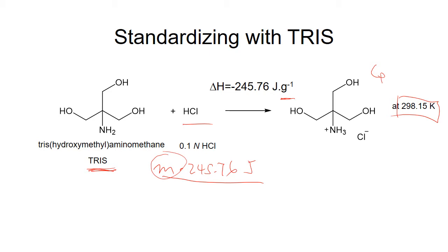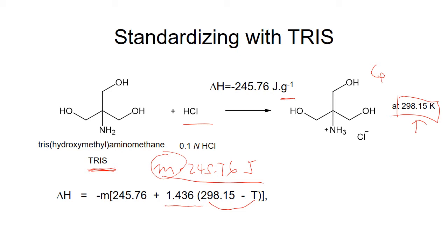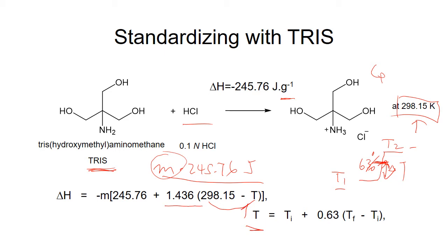If the temperature is different from 298 K, we need to make a correction, and the correction is 1.436 times the temperature difference. For the reaction, we start at T1 and then there is a temperature jump to T2 because it is an exothermic reaction. We use a temperature between these two, specifically 63% of the temperature rise above the initial temperature T1.